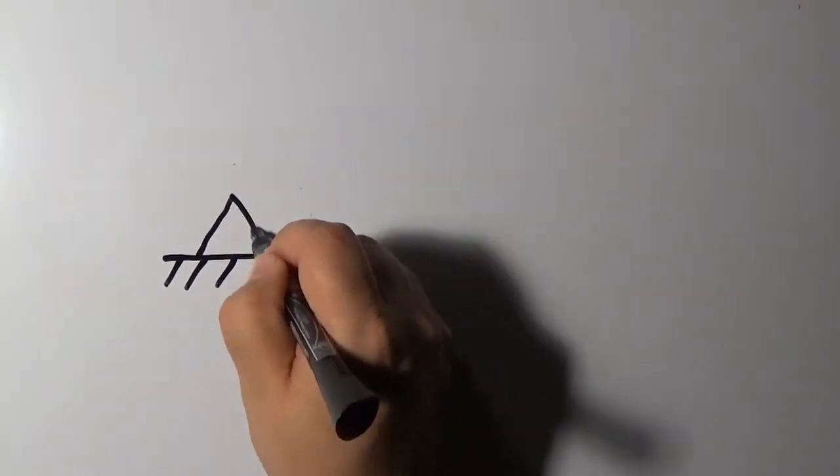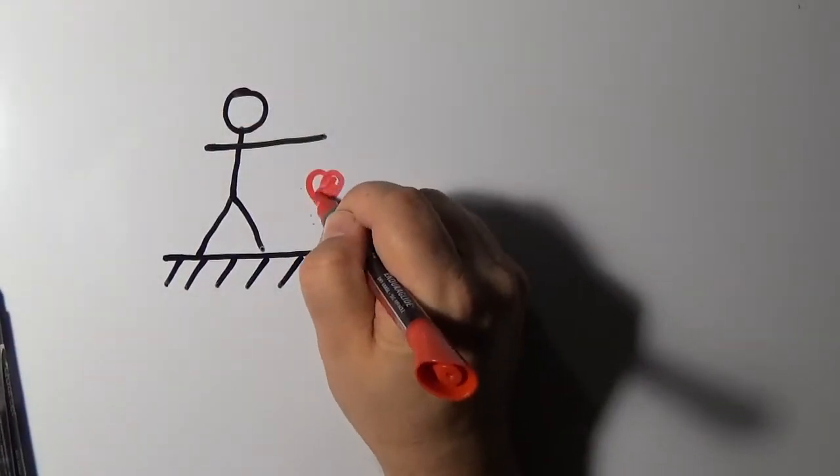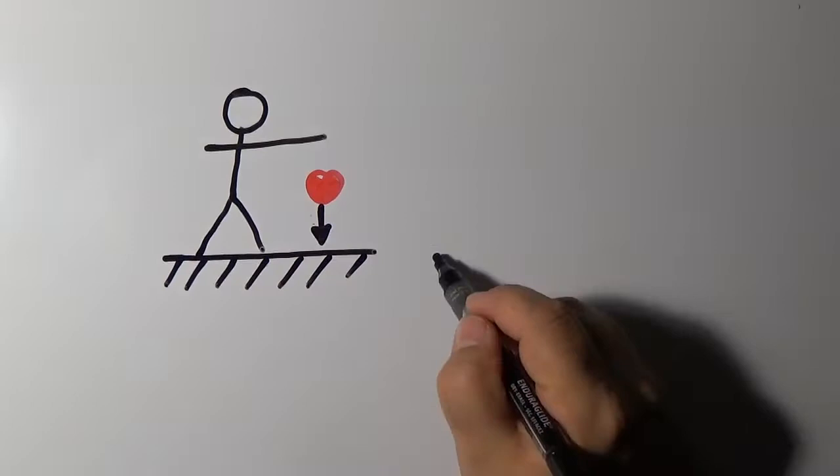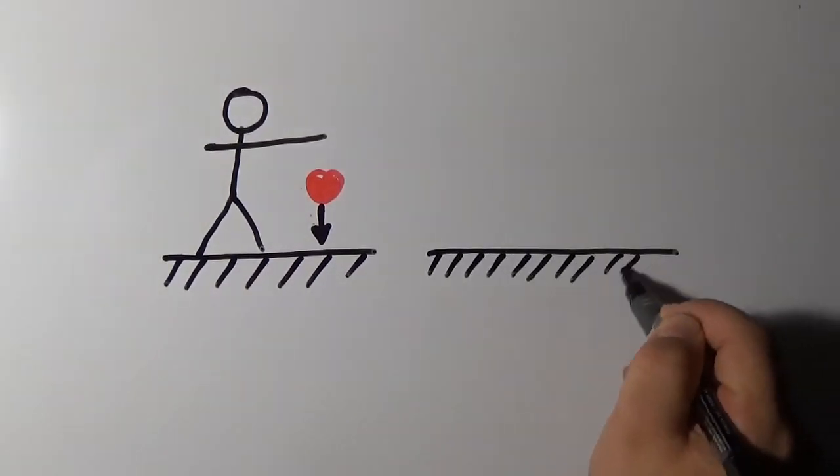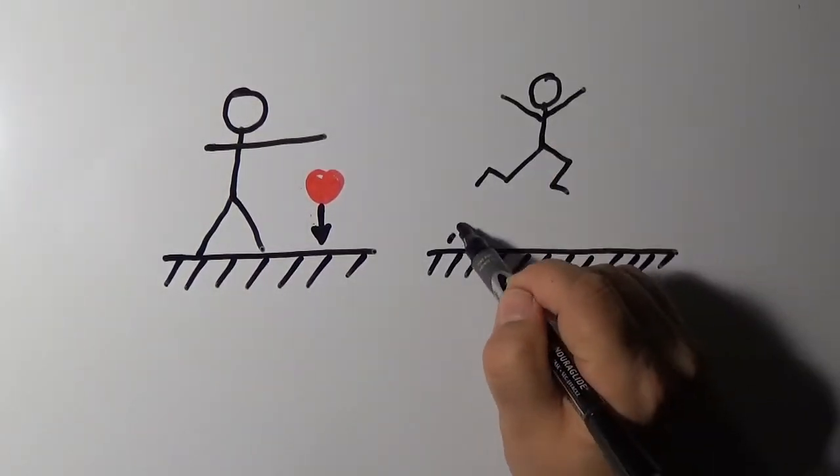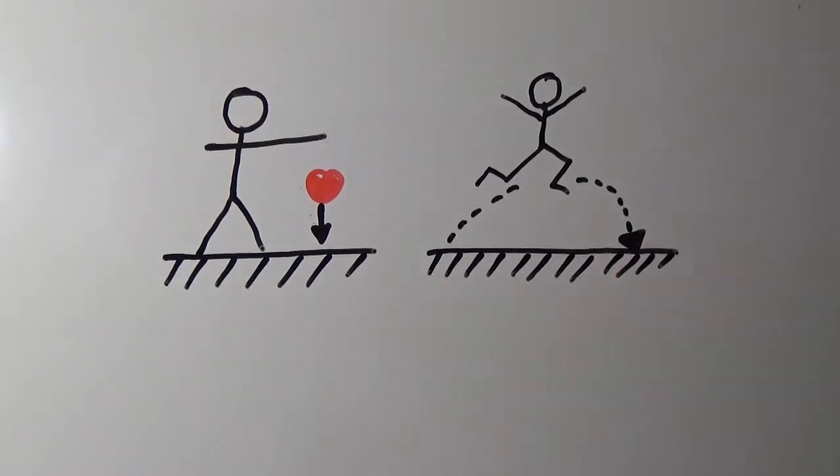We're all used to the idea that gravity exists. We drop objects and they fall to the ground. We jump up in the air, and no matter how high we jump, we always come back down.